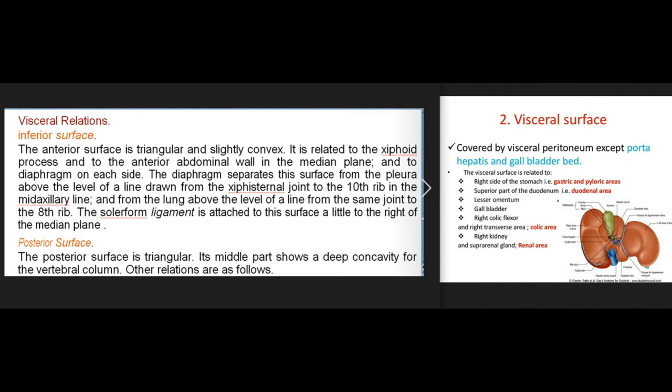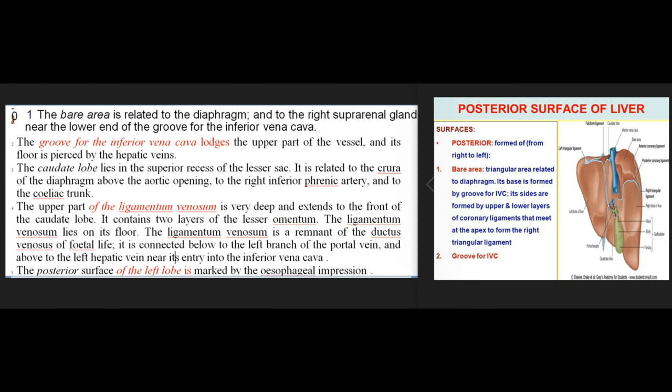Posterior surface: triangular, with a deep concavity for the vertebral column. The bare area is related to the diaphragm and to the right suprarenal gland near the lower end of the groove for the inferior vena cava. The groove for the IVC lodges the upper part of the vessel; its floor is pierced by the hepatic veins. The caudate lobe lies in the superior recess of the lesser sac, related to the crura of the diaphragm above the aortic opening, the right inferior phrenic artery, and the coeliac trunk. The fossa for the ligamentum venosum is deep, extends to the front of the caudate lobe, and contains two layers of the lesser omentum.